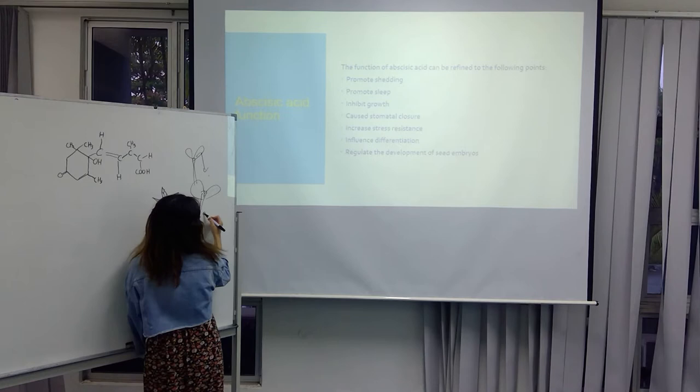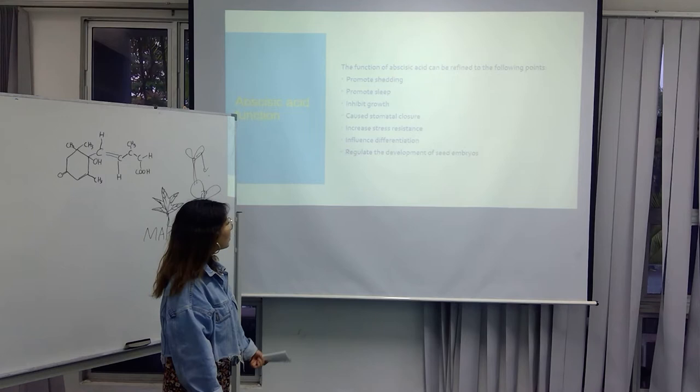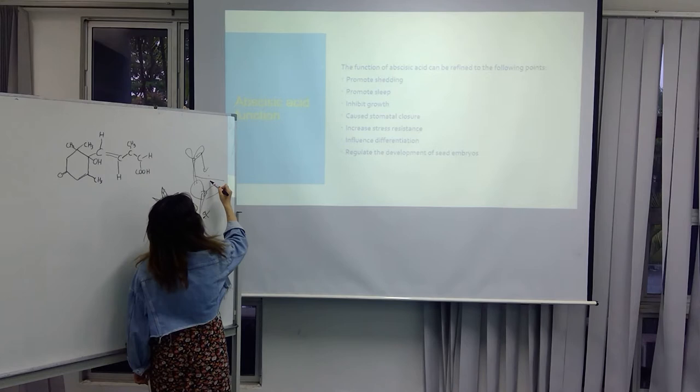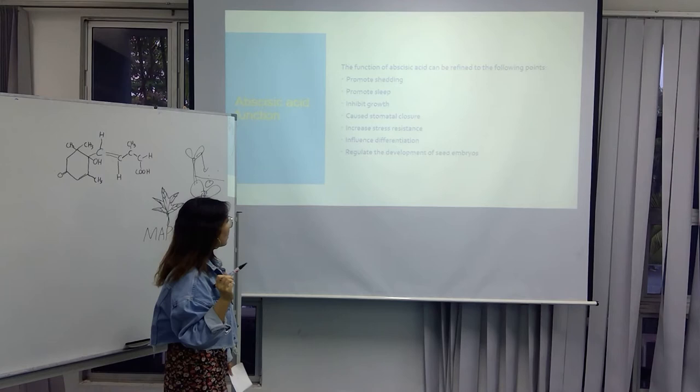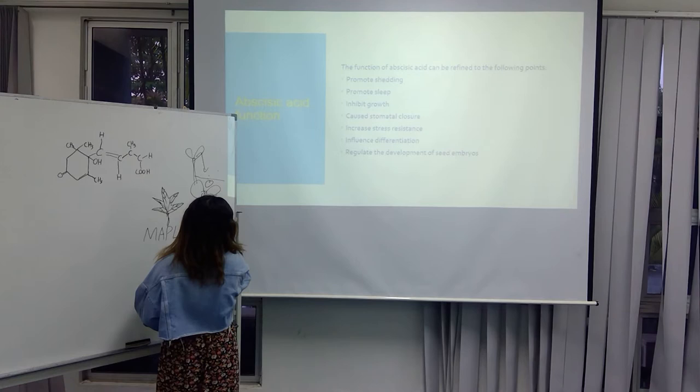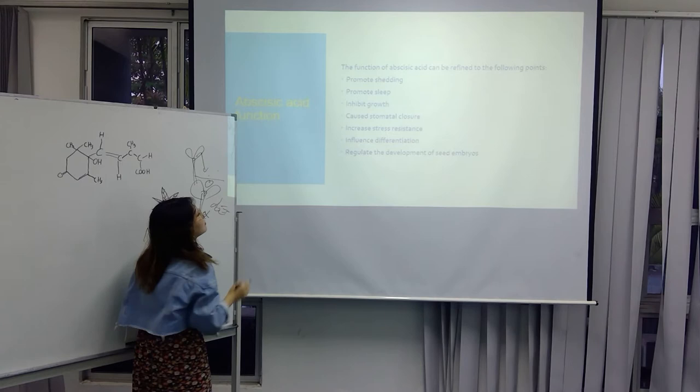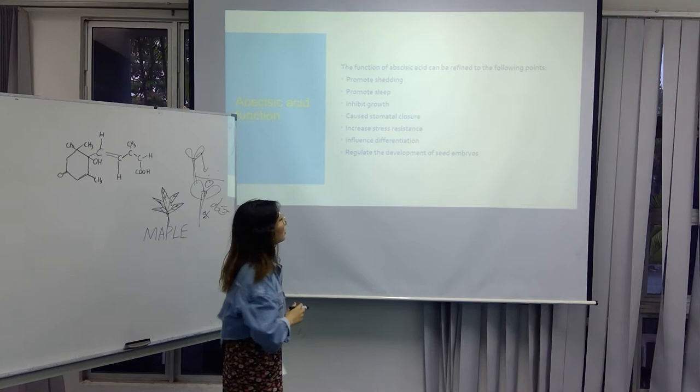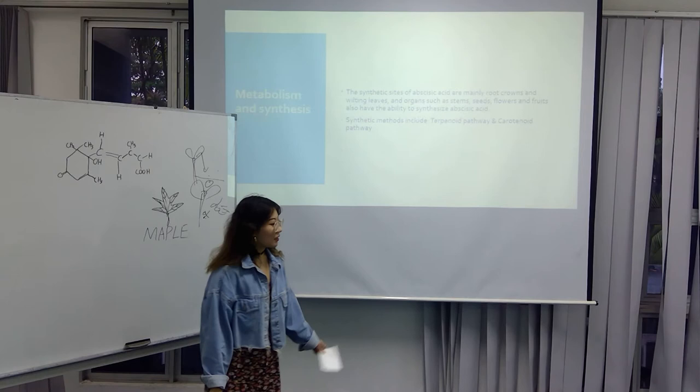And the fifth one is increase stress resistance. It can make plants adapt to more stress from outside. And the sixth one is influence differentiation. This means we can promote the cells to separate from each other. And the last one is regulate the development of seed and growth. So now this is all the function about abscisic acid.